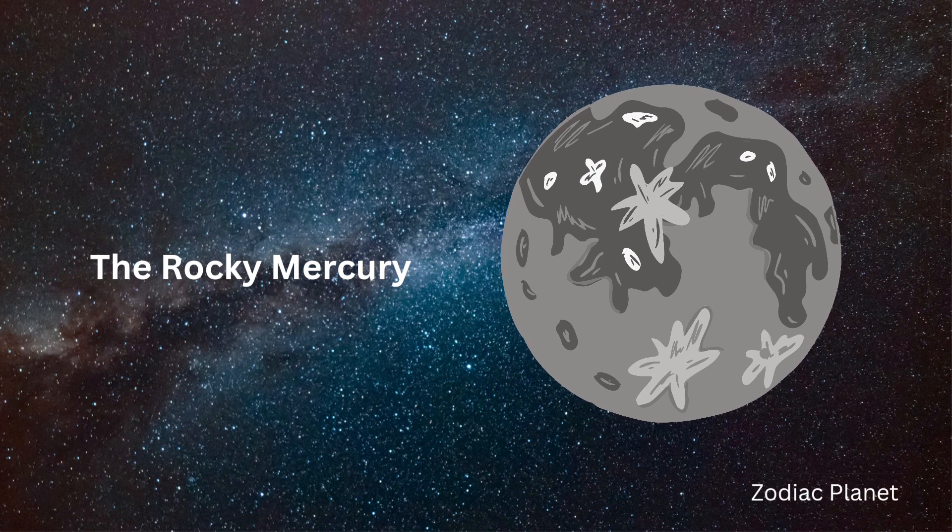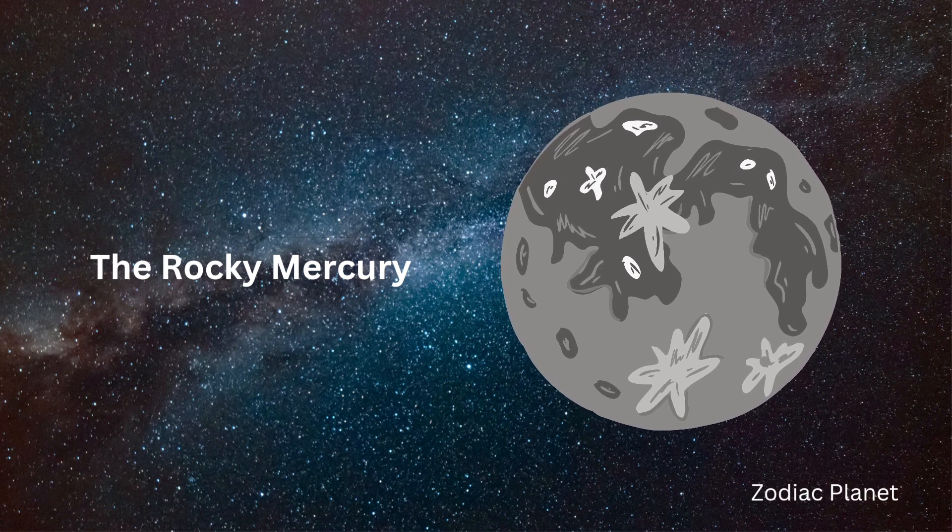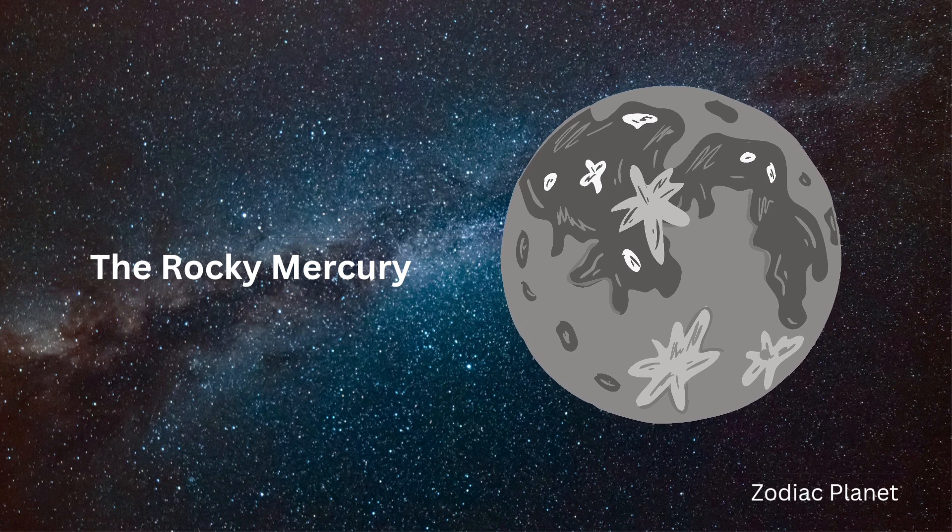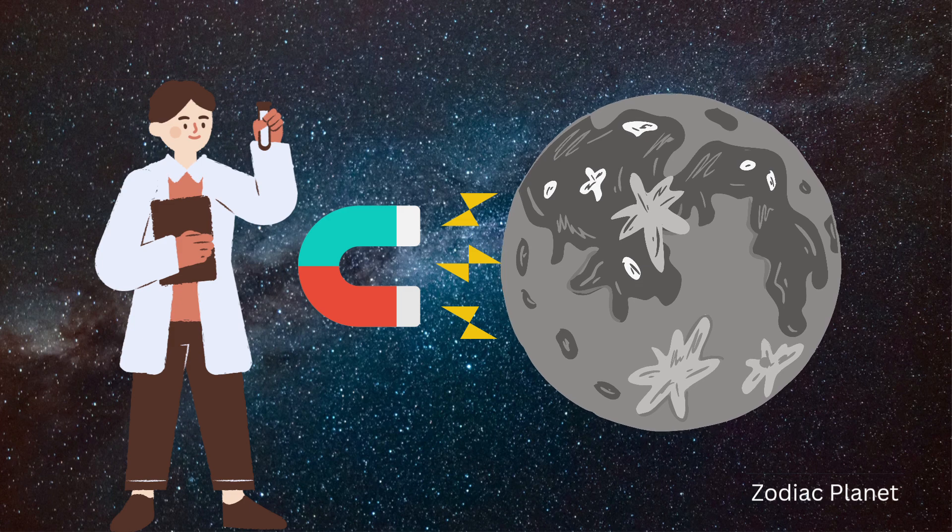Mercury is a very rocky world with very little atmosphere. The secrets of Mercury are slowly being uncovered. Scientists have discovered that it may have once had a magnetic field, which has since dissipated.